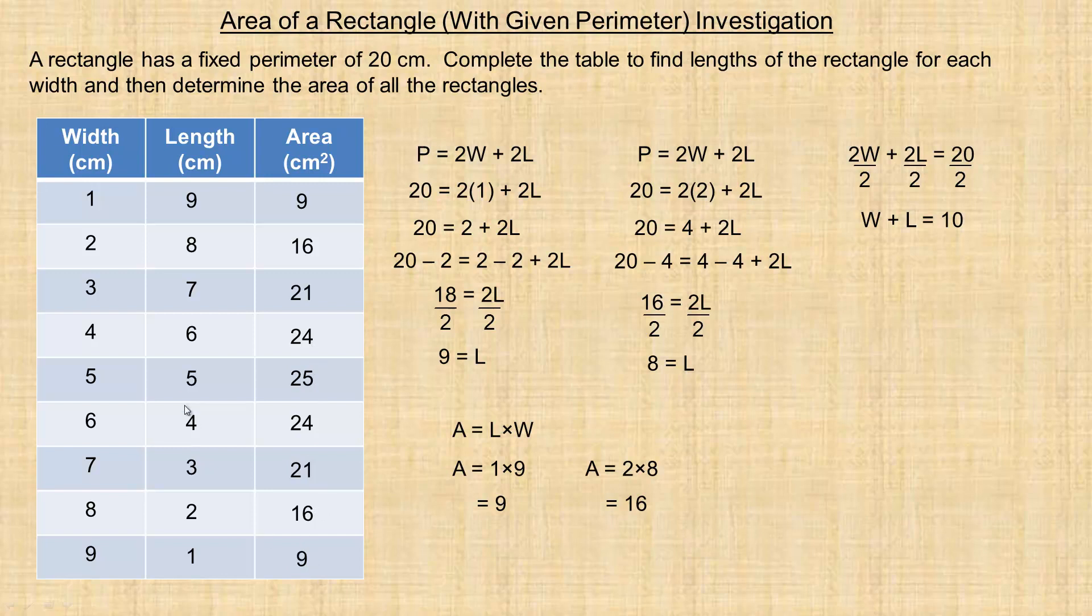Notice that these numbers started repeating again, because all we did was reorient the rectangle. A 4 by 6 rectangle should be the same area as a 6 by 4 rectangle, for example.